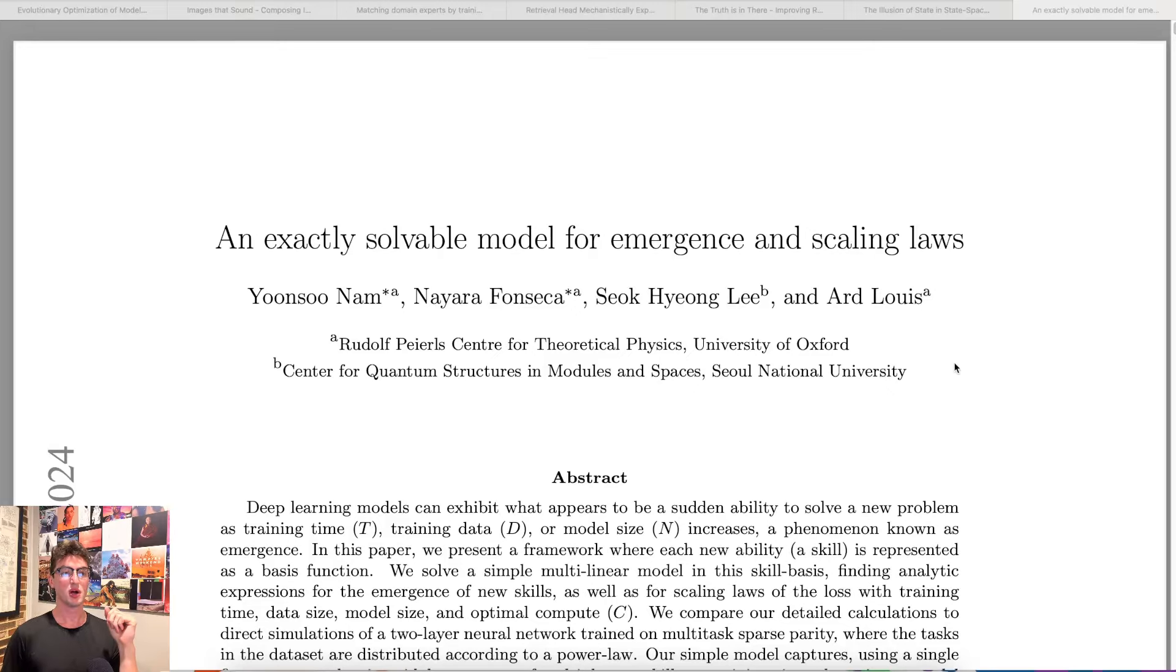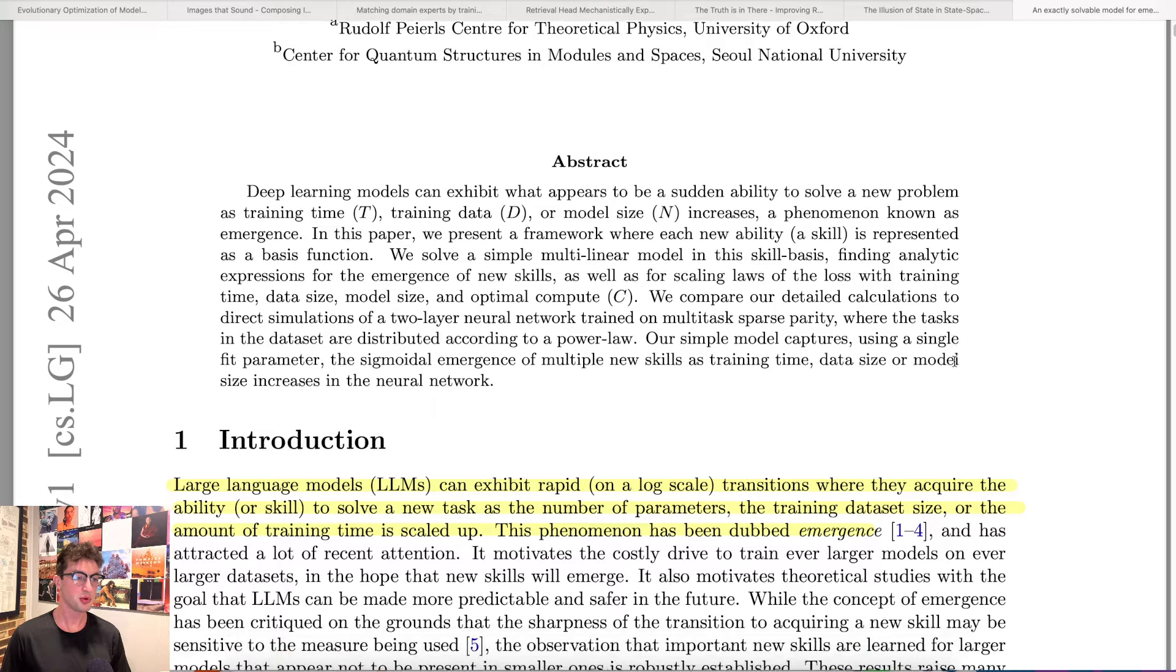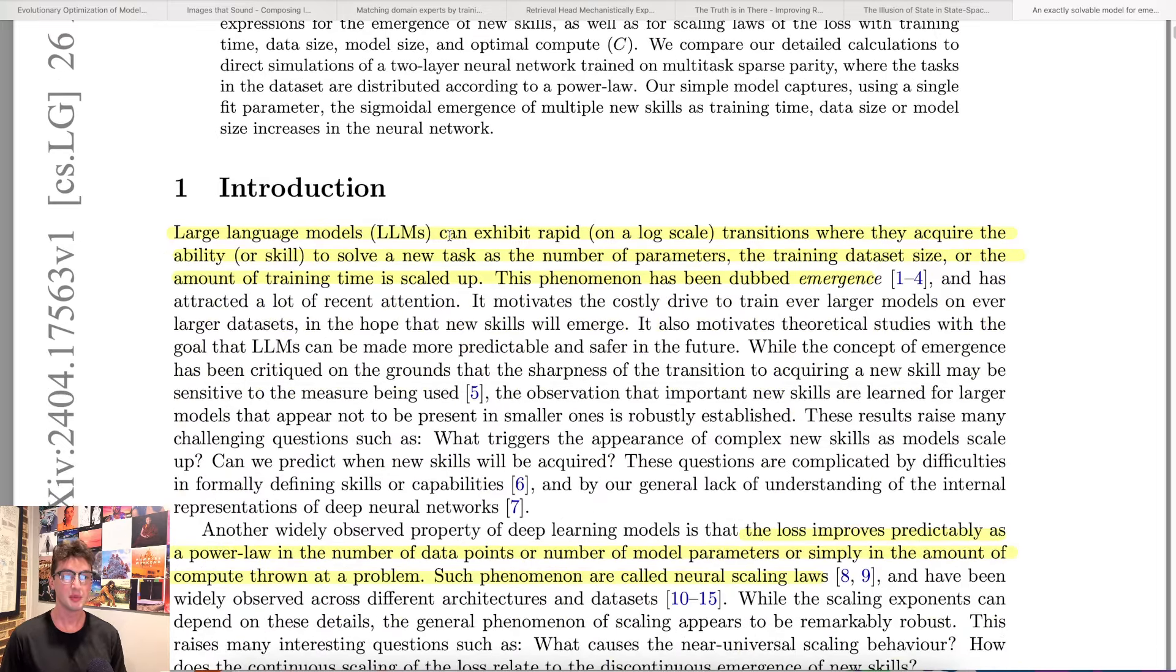An exactly solvable model for emergence and scaling laws. This one was pretty cool. So LLMs can exhibit rapid on a log scale transitions where they acquire the ability or skill to solve a new task as the number of parameters, training data set size, or amount of training time is scaled up. This phenomenon has been dubbed emergence.